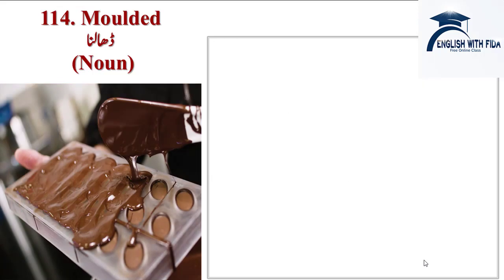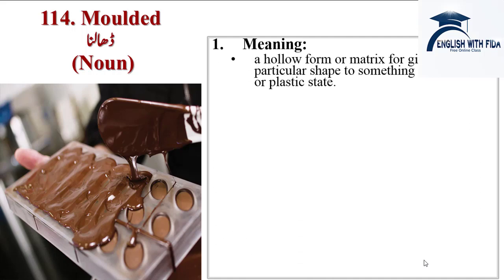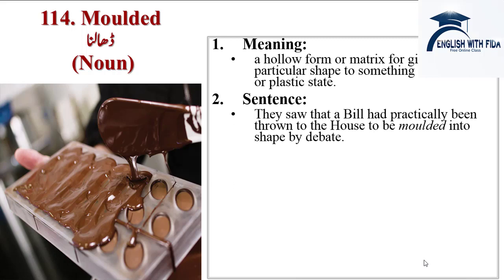Next word is molded. Molded means to give something a mold, like metals are molded, or casts are prepared in orthopedics. It's a noun. A hollow form or matrix for giving a particular shape to something in a molten or plastic state. Sentence: they saw that a bill had practically been thrown to the house to be molded into shape by debate.